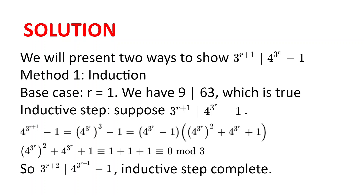First method is induction. The base case is r equal to 1: we have that 3 to the power of 2, which is 9, divides 4 to the power of 3 minus 1, which is 63, and indeed 9 divides 63. Now on to the inductive step. Suppose that 3 to the power of r plus 1 divides 4 to the power of 3 to the power of r minus 1.